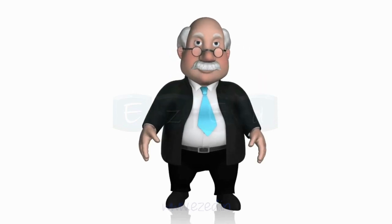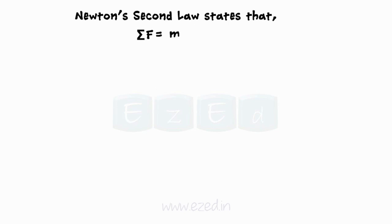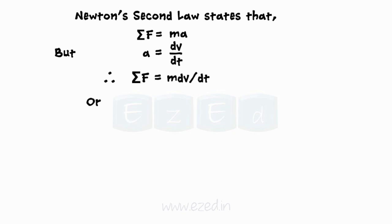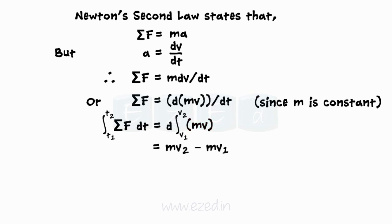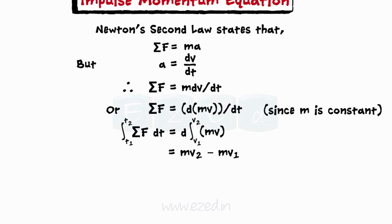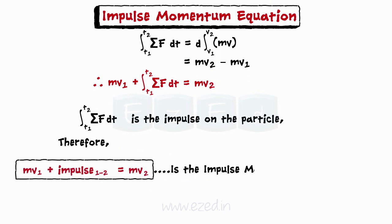Let us derive the equation for impulse momentum. According to Newton's second law, the summation of all forces is equal to mass into acceleration. But acceleration is the derivative of velocity with respect to time. On substituting the value of acceleration into Newton's law equation, and since MV is referred to as momentum, integrating force between the time interval T1 to T2, during which the velocity of a particle changes from V1 to V2, we get the impulse momentum equation.